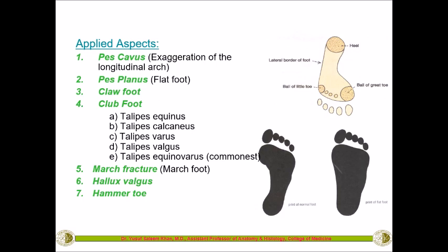The seventh condition is hammer toe. In claw foot, all digits are flexed. In hammer toe, there is hyperextension at the metatarsophalangeal joint and flexion at the interphalangeal joint, but the distal interphalangeal joint is extended — so the toes are directed forwards and it looks like a hammer, hence called hammer toe. These are the applied conditions related to the foot.